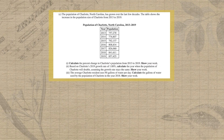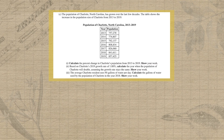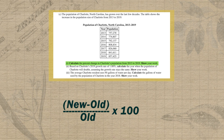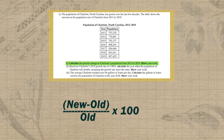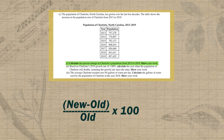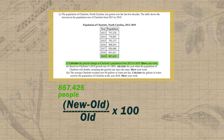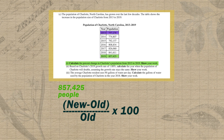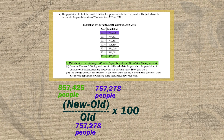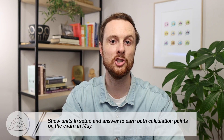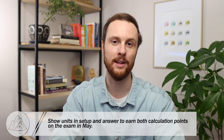Let's take a look at an example from the FRQ section of the 2022 APES exam. We have a table showing Charlotte's population size at different points in time. In part C, we're asked to calculate the percent change in Charlotte's population from 2013 to 2019. First we find the new number — the 2019 population size — and plug that in. Then we find the old number — the 2013 population size — and plug that in. Punch it into the calculator and we get a final answer of 13.22%. Remember to use parentheses to preserve order of operations, and show your units in your work and final answer to earn full credit on a math-based FRQ.